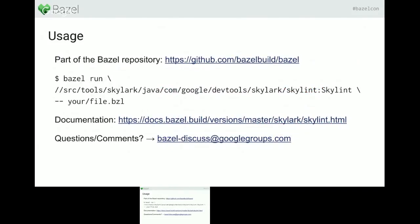Those are some examples of what the linter can do. If you want to use it, the linter is part of the Bazel repository. To run it, use 'bazel run' with the SkyLint target name — just search for SkyLint and you'll find it. Documentation has been available for about two days now. Feedback is welcome on the usual channels: Issue Tracker, Bazel-Discuss, Google Groups. Thank you for your attention.